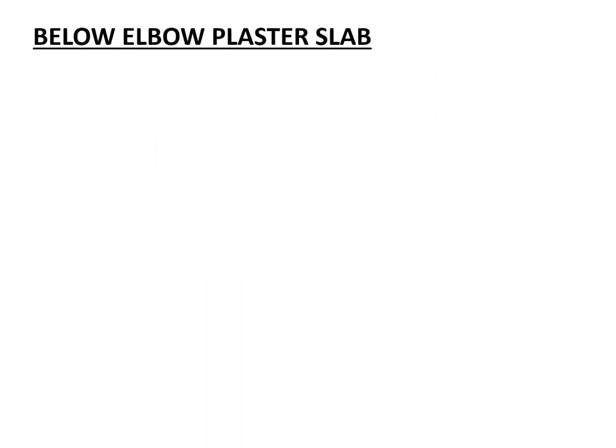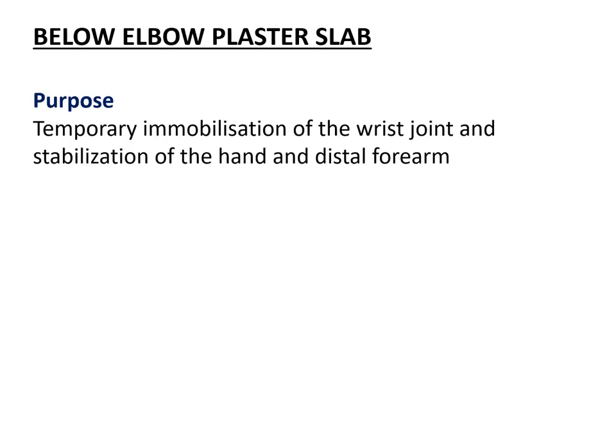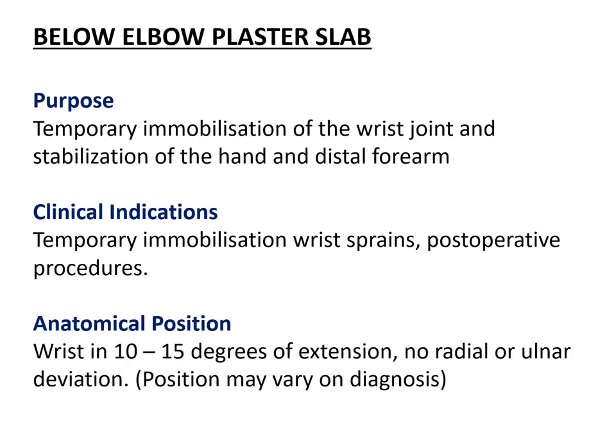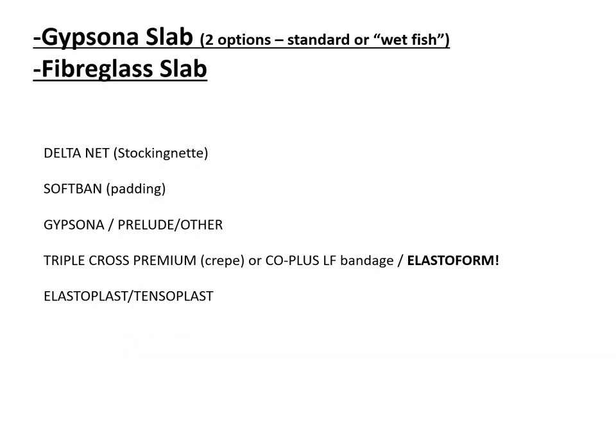Some examples now of how to apply a below-elbow plaster slab. The purpose is for temporary immobilization of the wrist joint and stabilization of the hand and distal forearm. Indications include wrist sprains and post-operative procedures. The anatomical position is usually the wrist in 10 to 15 degrees of extension with no radial or ulnar deviation, but this position may vary based on the diagnosis being treated.